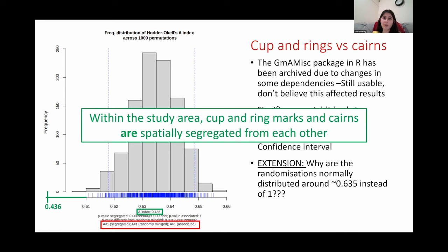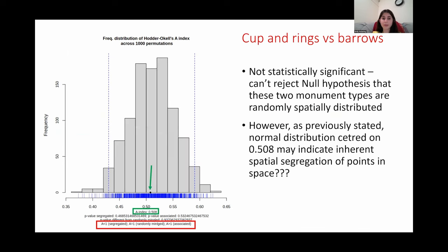So within the study area cup and ring marks and cairns are spatially segregated from one another. Testing cup and ring marks against barrows we got an A index value of 0.508, which lies smack bang in the middle of the randomization, giving us an insignificant result. So from this we couldn't reject the null hypothesis.